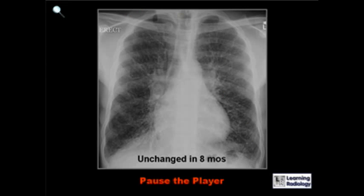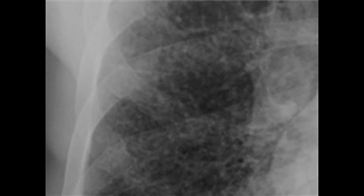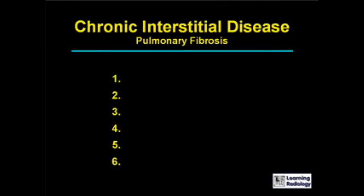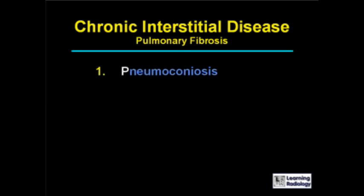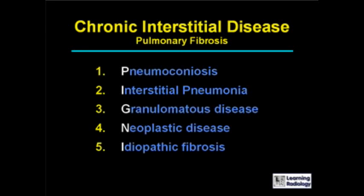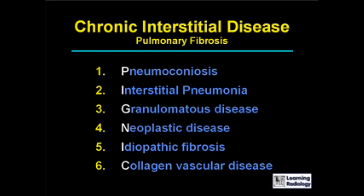The next differential is for chronic interstitial disease or pulmonary fibrosis. Six causes are given: pneumoconiosis, interstitial pneumonias, granulomatous disease, neoplastic disease, idiopathic fibrosis, and collagen vascular disease.